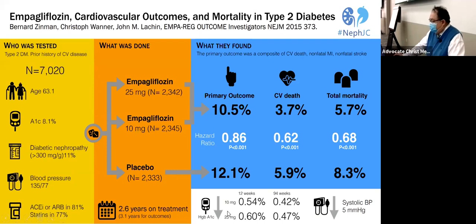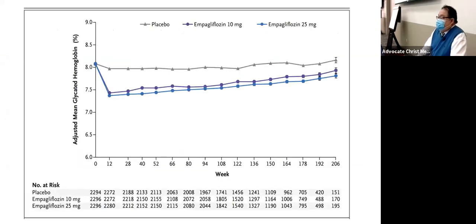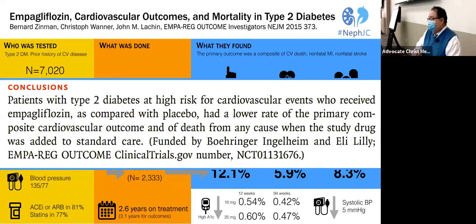There was also a signal for decreasing hemoglobin A1C — for patients on 25 mg and 10 mg at 12 weeks and 94 weeks — and a signal for improvement in blood pressure. These patients had generally good kidney function, not the stage 3 or stage 4 patients we normally see. In conclusion, patients with type 2 diabetes at high risk for cardiovascular events given empagliflozin had lower rates of the primary composite cardiovascular outcome and death from any cause when the study drug was added to standard care — RAS inhibition.